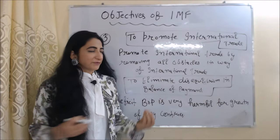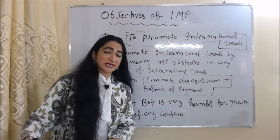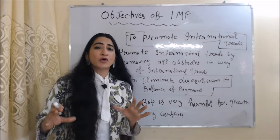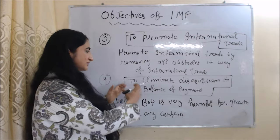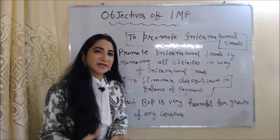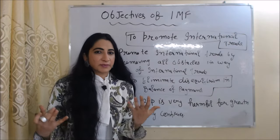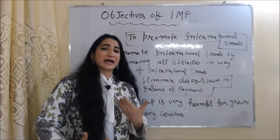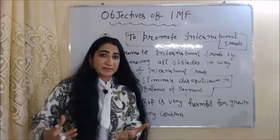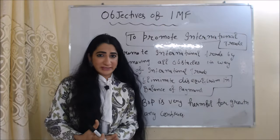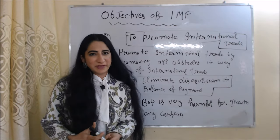The next objective of IMF is to promote international trade. IMF promotes international trade by removing all obstacles in the way of international trade. The next objective is to eliminate disequilibrium in balance of payment. Disequilibrium in balance of payment means whenever the balance of payment either goes into surplus or deficit. Deficit balance of payment is very harmful for the growth of any country, but IMF helps to reduce the deficit in balance of payment.